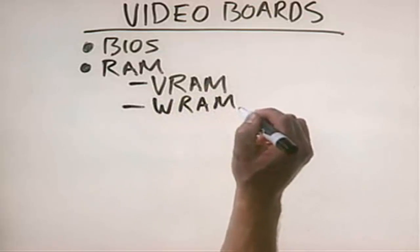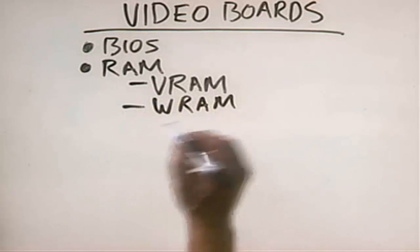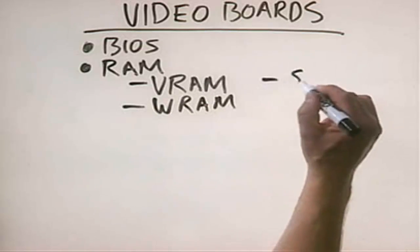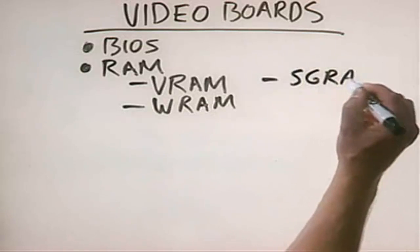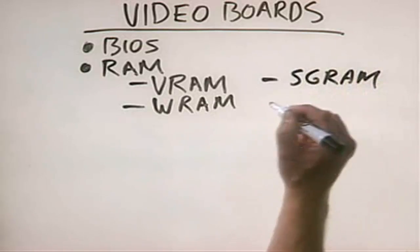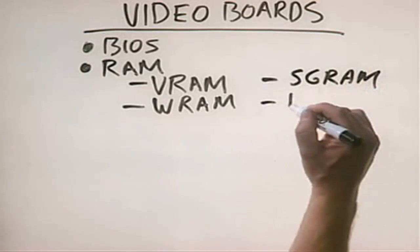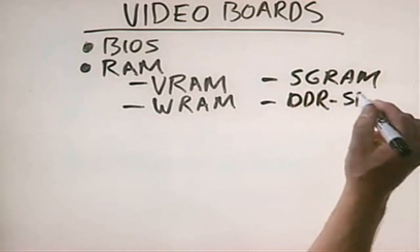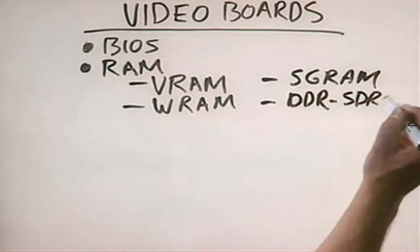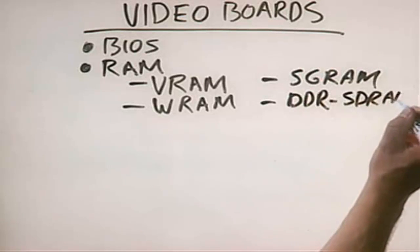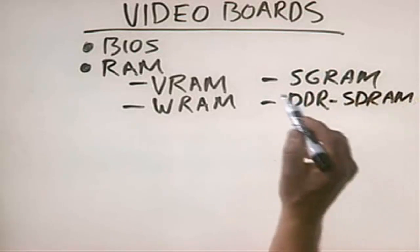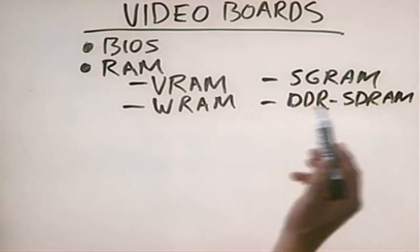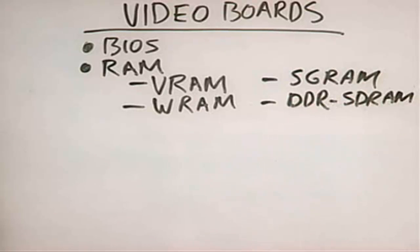These aren't used anymore. On newer boards, we use SGRAM or even DDR-SDRAM chips — the same types of chips that are used on the memory sticks in newer systems, DDR-RAM.